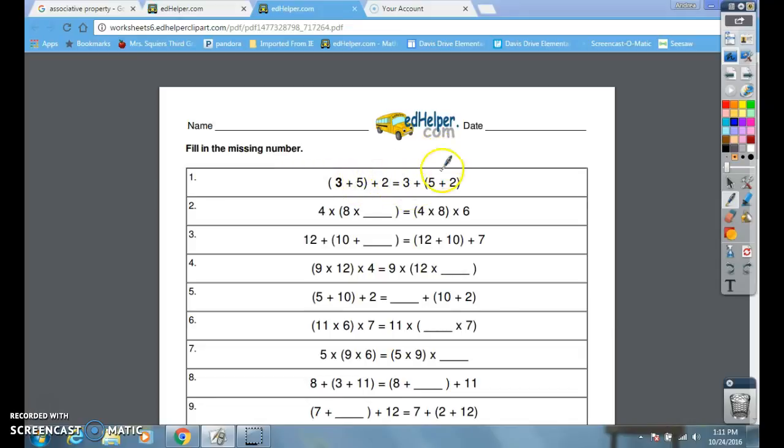If you go down to number two: 4 × (8 × ?) = (4 × 8) × 6. So either I can do 4 times 8 and then multiply by 6, or when you come over here they've taken the 4 out of the parentheses and put it by itself.